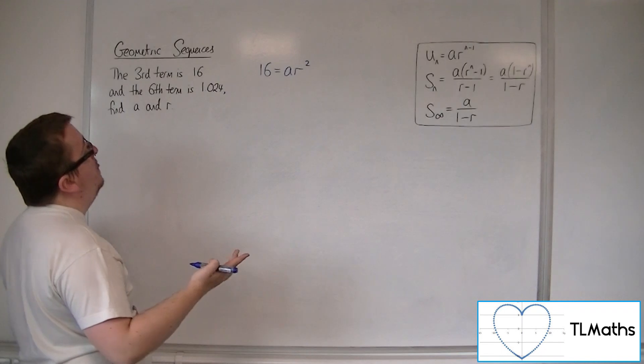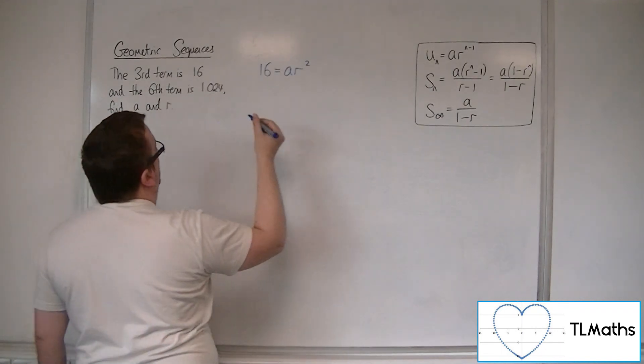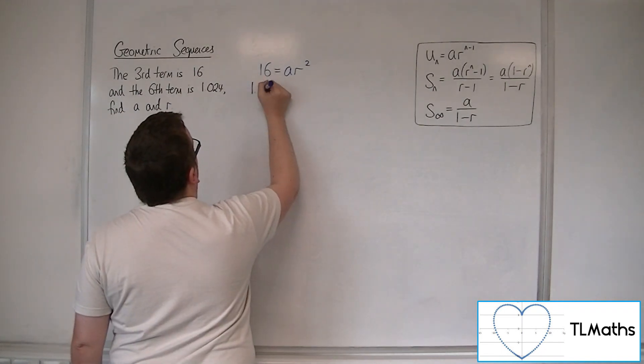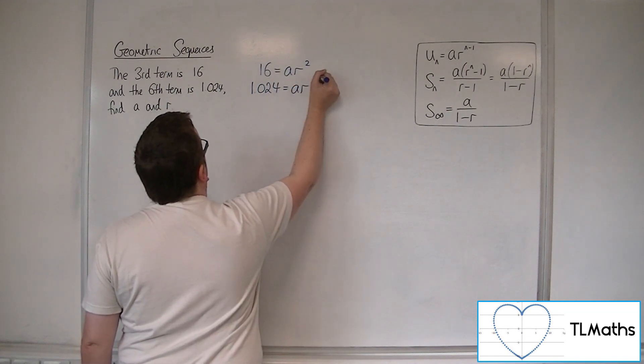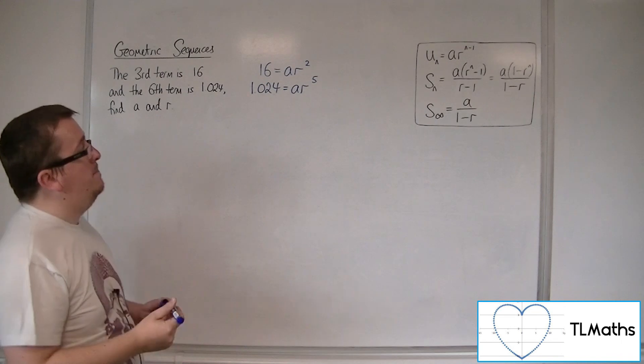n minus 1, 3 take away 1. And if the sixth term is 1.024, then 1.024 is equal to ar to the 5, in much the same way.